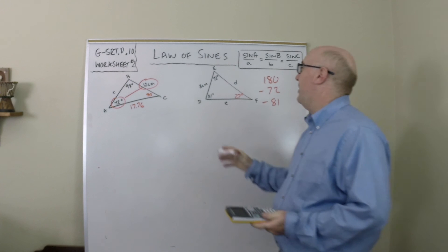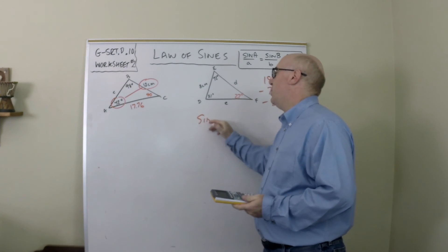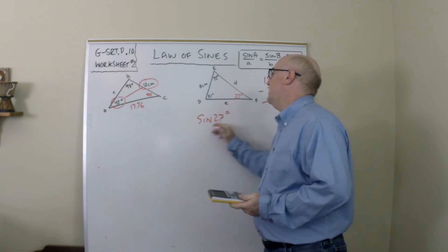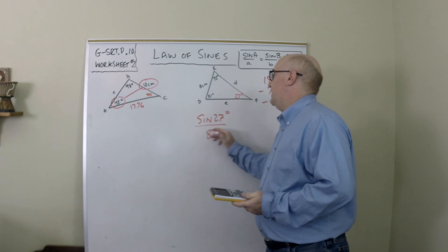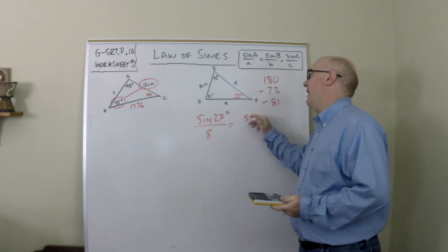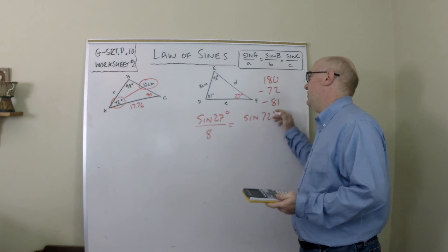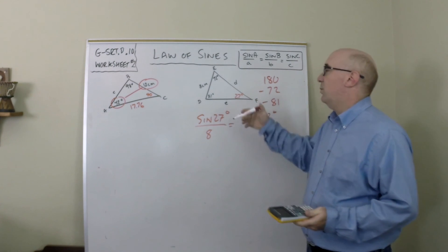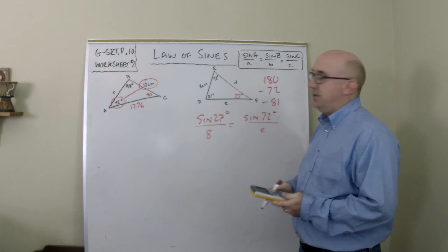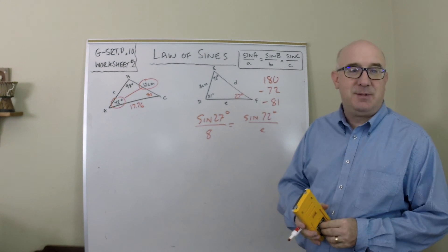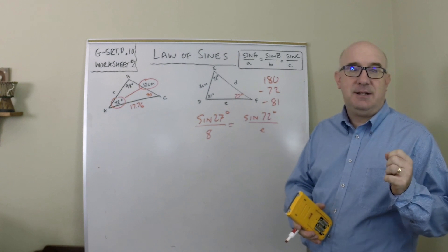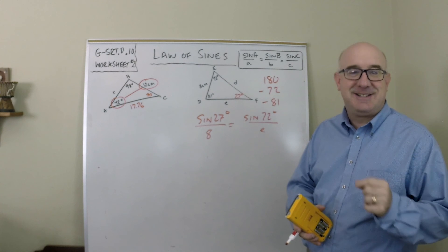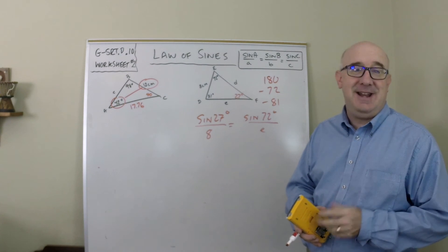So now I can say sine of 27 is to 8 as sine of 72 is to e or whatever, and then continue the solving process. So sometimes you have to look at the sum of the triangle being 180 to help you out.